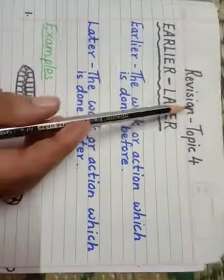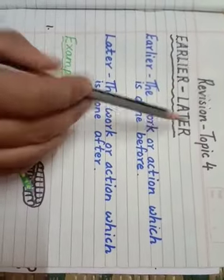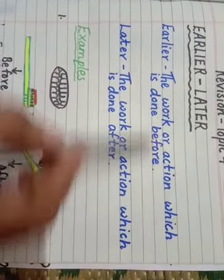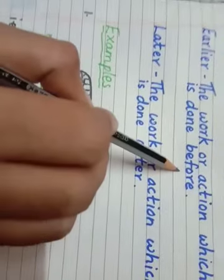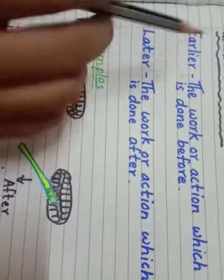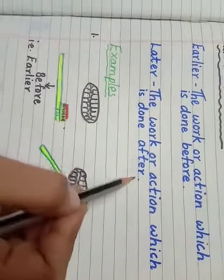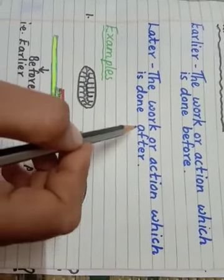Revision of Topic 4: Earlier and Later. Earlier means the work which is done before. Koi bhi kaam pahele hota hai, usa kehte earlier. Later: The work or action which is done after. Koi bhi kaam baad mein karte hai. That is later.